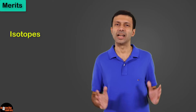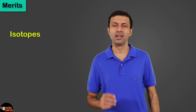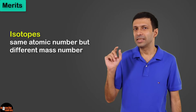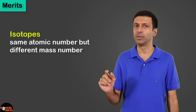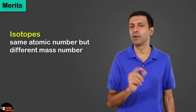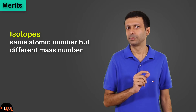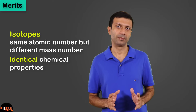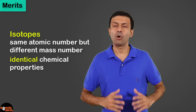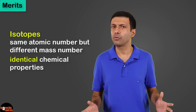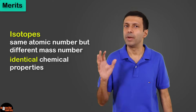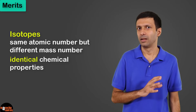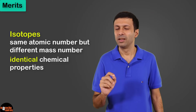First, let's talk about isotopes. Isotopes are atoms of an element having the same atomic number but different mass number. They have identical chemical properties. Isotopes could not fit into Mendeleev's periodic table, but in the modern periodic table they fit in nicely because they have the same atomic number.